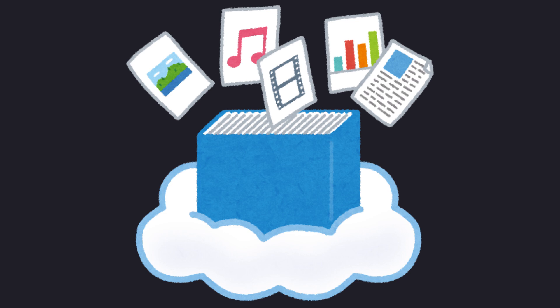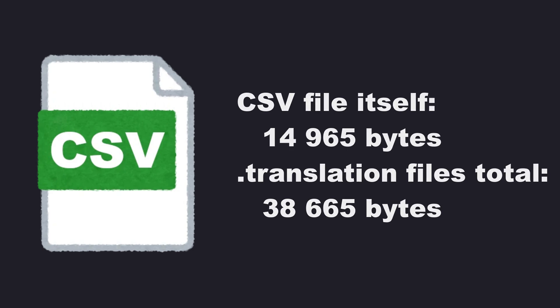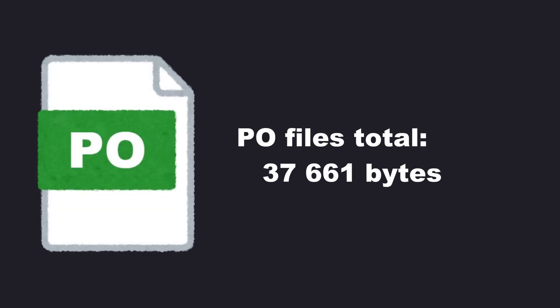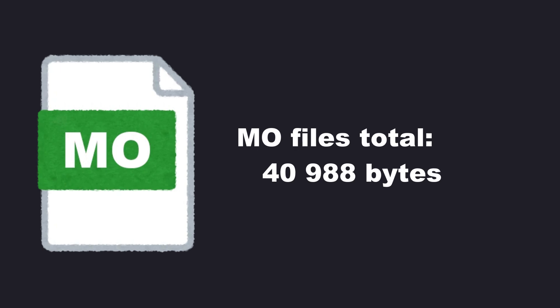Before we go on to the performance numbers, let's take a look at the file sizes. For the CSV files, we have the CSV file itself which is around 14,965 bytes, but the translation files it generates are a total of 38,665 bytes. Then we have PO files which come in at a total of 37,661 bytes, and MO files which come in at 40,988 bytes in total. MO files are bigger in size.